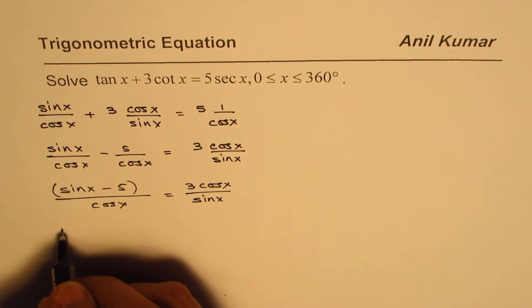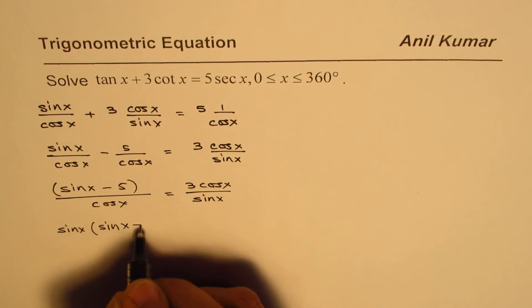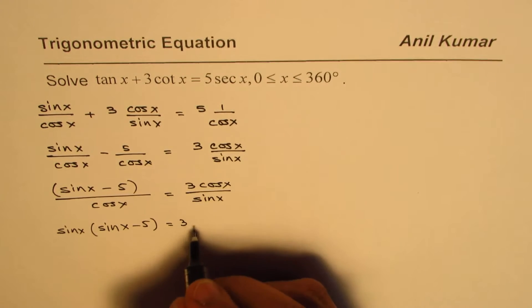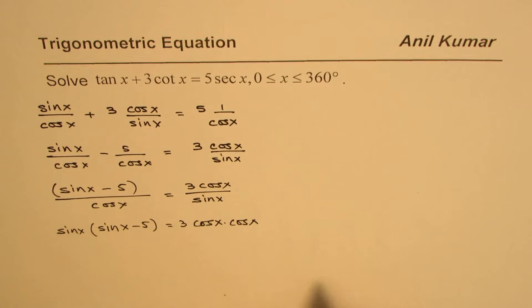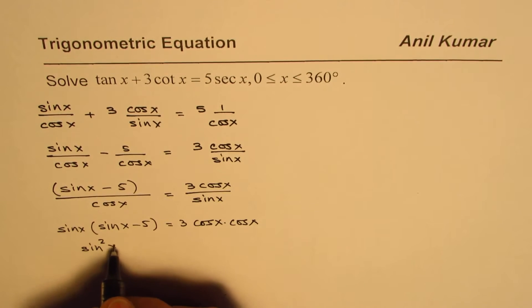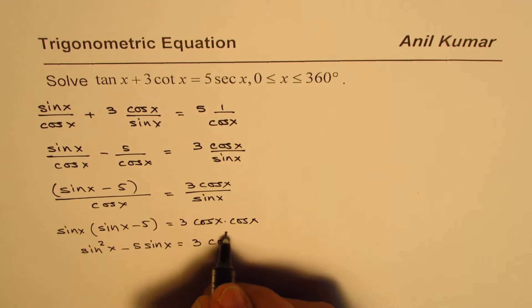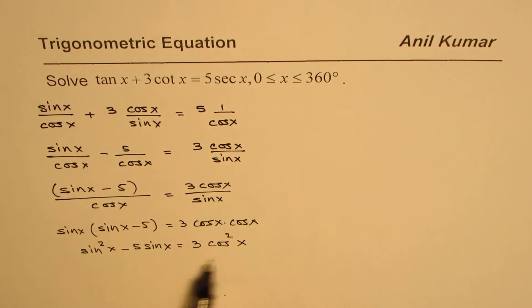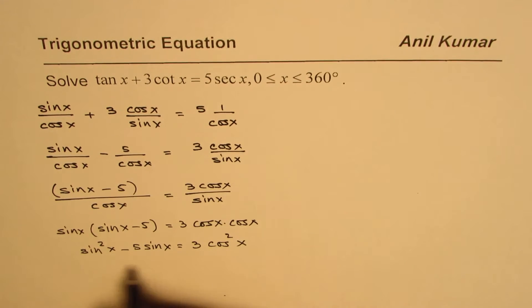Cross-multiplying gives us sin x times (sin x minus 5) equals 3 cos x times cos x. Opening the bracket, we get sin²x minus 5 sin x equals 3 cos²x. Since we have both sine and cosine terms, we can write cos²x as 1 minus sin²x to get a quadratic equation in sine.